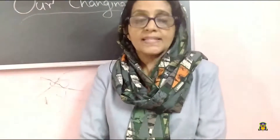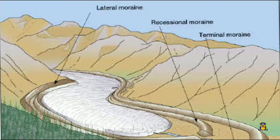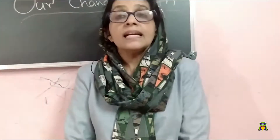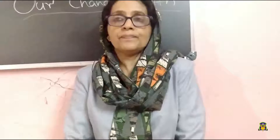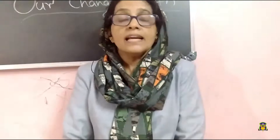Next, the work of ice. A glacier is a river of ice. As the material carried by the glaciers — such as rocks, big and small stones, sand, and silt — gets deposited, these deposits are called glacial moraines. Glacial moraines are the materials carried and deposited by glaciers.